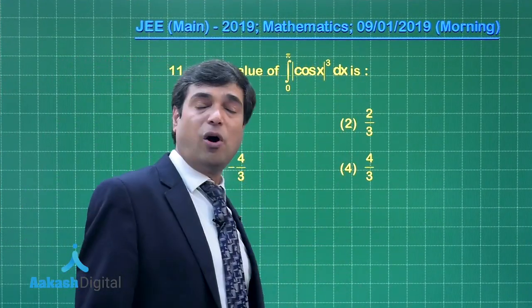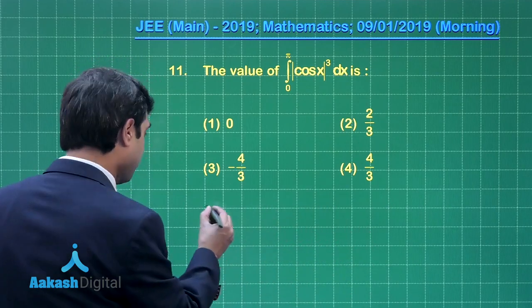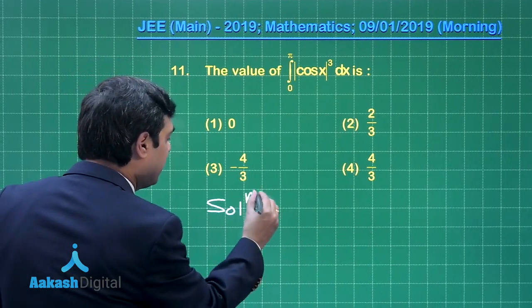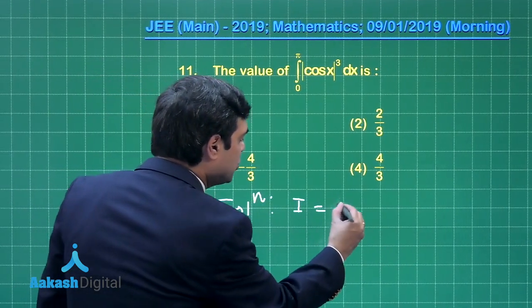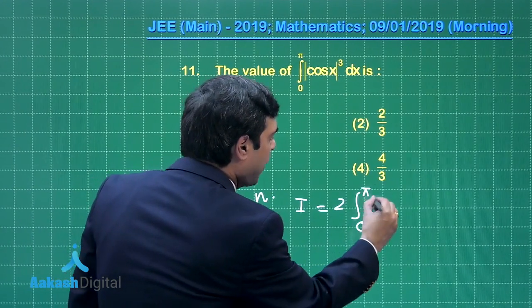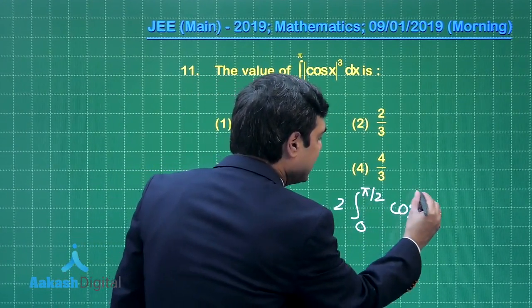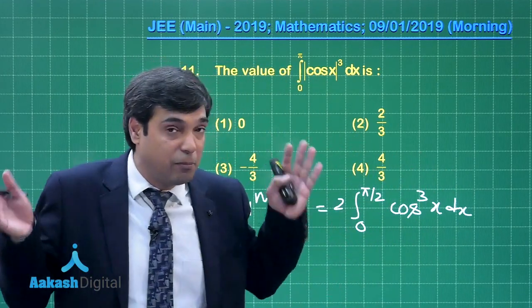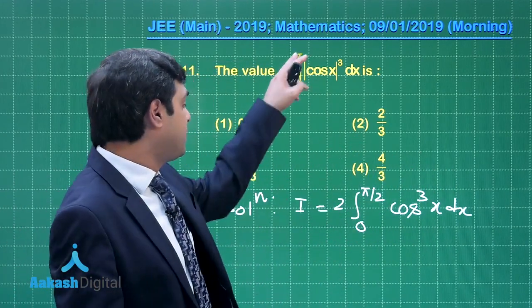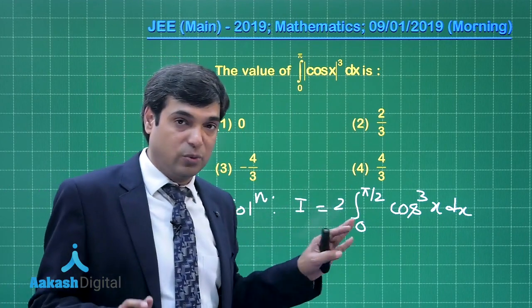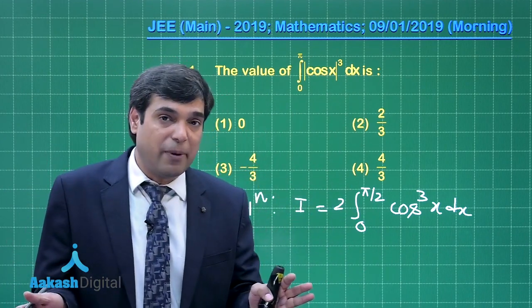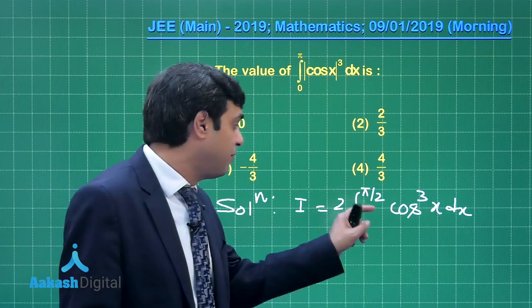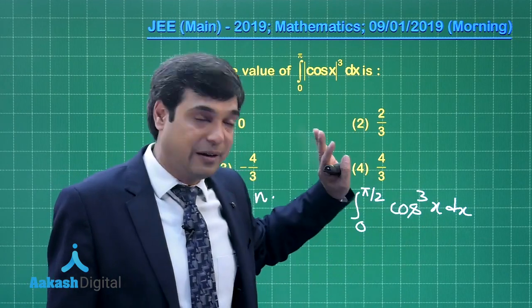Let us consider the next question. The value of ∫₀^π |cos x|³ dx is given. A simple question - we can write the given integral as 2 times ∫₀^(π/2) cos³x dx because f(2a-x) is unchanged because of the modulus symbol there. So it becomes 2 times 0 to π/2. Now, in the interval 0 to π/2, cos x is positive, so we have modulus eliminated.